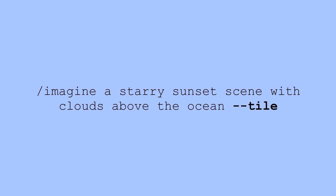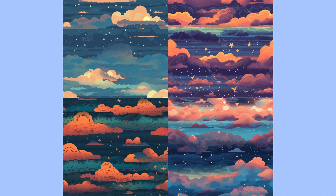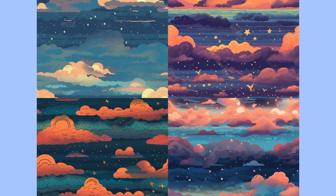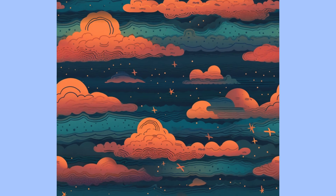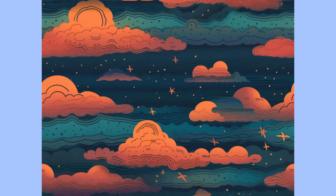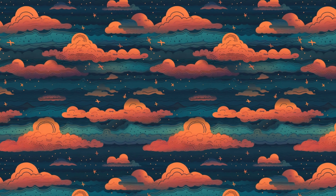For the first prompt I used /imagine and then 'a starry sunset scene with clouds above the ocean' and finally --tile. Dash-dash tile is how we tell Midjourney that this needs to be a seamless continuous pattern. These are the four results Midjourney gave us and they look awesome. I went ahead and upscaled my favorite, which is the third one, and put them side by side — you can see it creates a perfect seamless pattern.